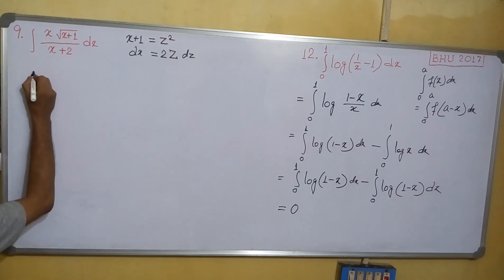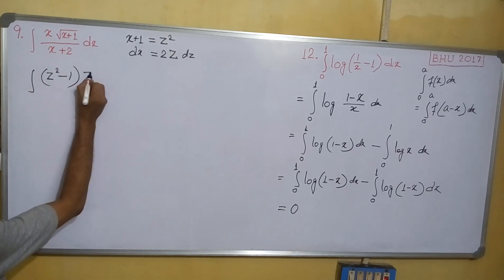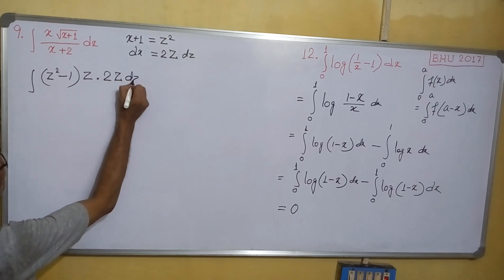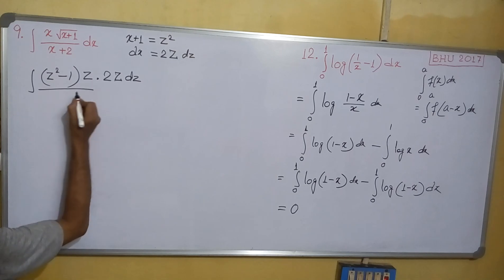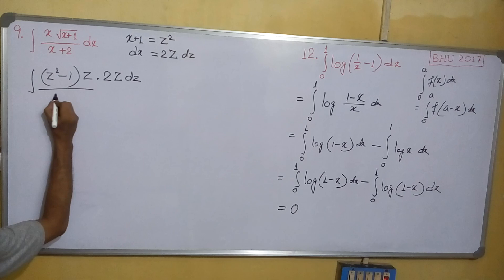So we can rewrite: x will be z squared minus 1, root of (x+1) will be z, dx will be 2z dz, and x+2 will be z squared plus 1.